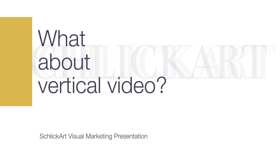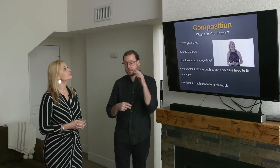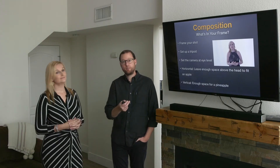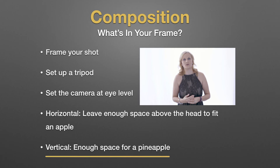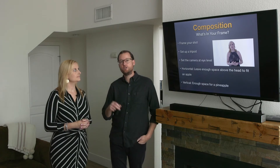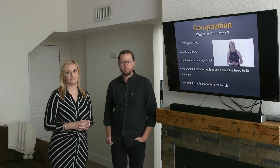If you don't want to do the horizontal composition, there is the option to do the vertical composition. You would use this for things like Facebook Stories and Instagram Stories. Instead of an apple above your head, you want a pineapple above your head — it leaves that little extra room, still showing you to about your waist or hip area. That aspect ratio fits perfectly into those platforms. Otherwise, if you're posting straight to Facebook or YouTube, you generally don't want to film in those vertical formats.